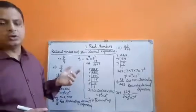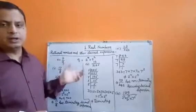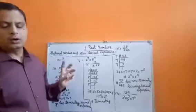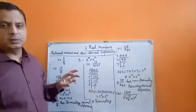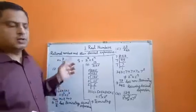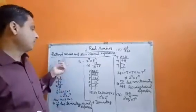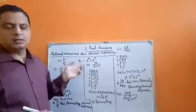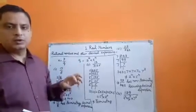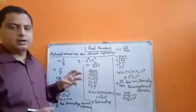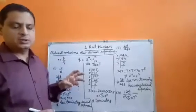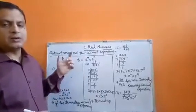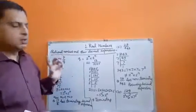If a number has a decimal expansion of the type terminating decimal expansion or non-terminating repeating decimal expansion, then it will be a rational number. And if a number has the decimal expansion of the type non-terminating non-repeating decimal expansion, then it will be an irrational number.